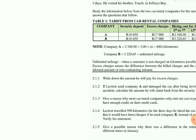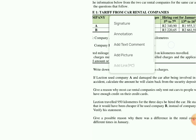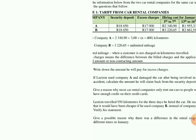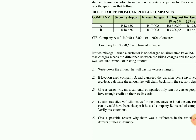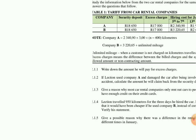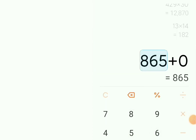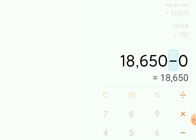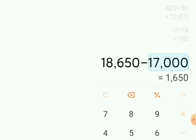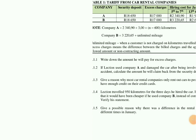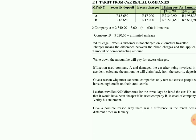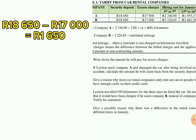Remember: if Lexin used Company A and damaged the car, to find the amount he will claim back from the security deposit, we deduct the access charges because they are charges being applied against us. Using the calculator: R18,650 minus the access charges gives us R1,650. So the amount he will claim back is the security deposit minus the access charges, which equals R1,650.